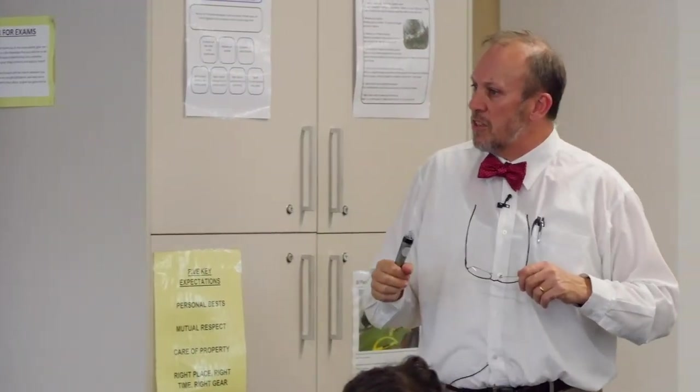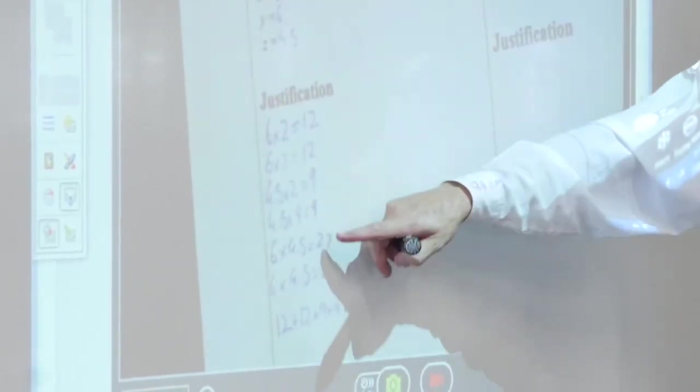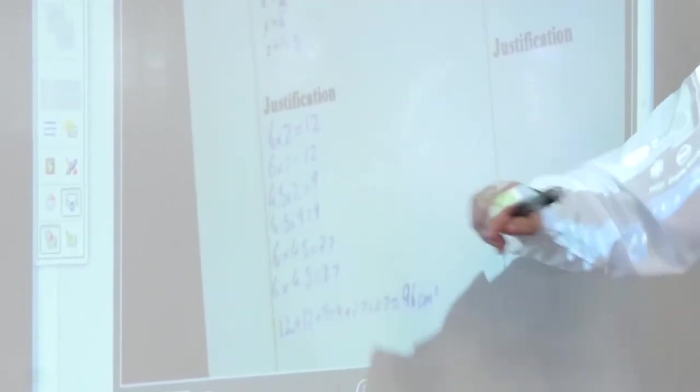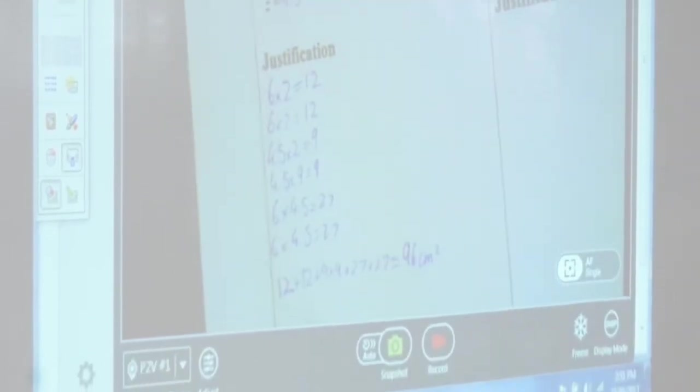Don will just come up and put his underneath to show the justification. There's their numbers there. So the 12, two times the 4.5, the nine and double it. 6.5, 4.5 times six, 27, all come out to 96. So that was, so you got ones that were close and then, okay, let's manipulate that one a little bit. Thanks Dom.